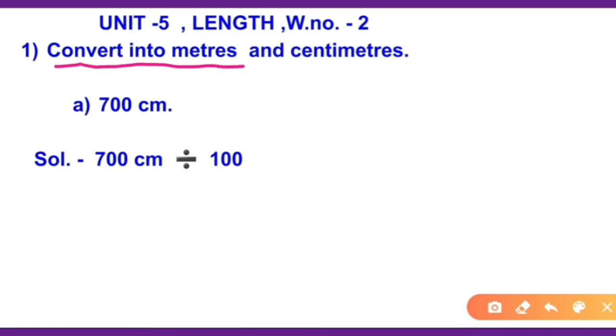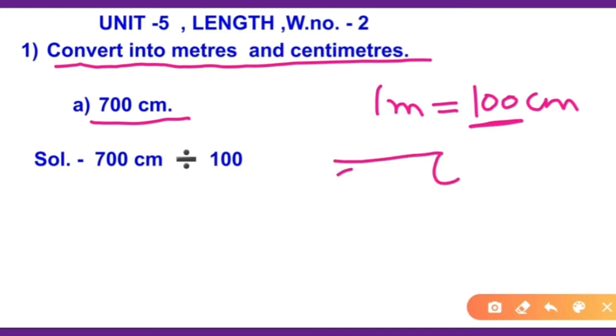Convert into meters and centimeters. 700 centimeters is given. We have to tell you how many meters and centimeters are there. So we know 1 meter is equal to 100 centimeters. Whenever lengths are given in centimeters, and you have to convert it to meters and centimeters, always divide by 100. So we will check that in 700, we will see how many hundreds are there.